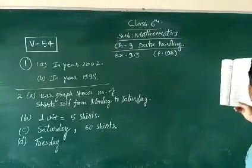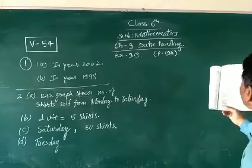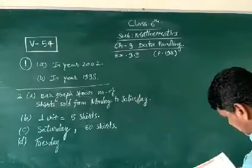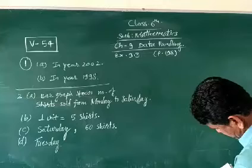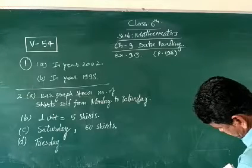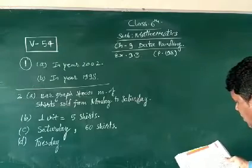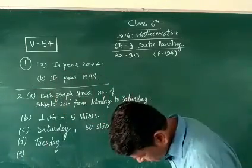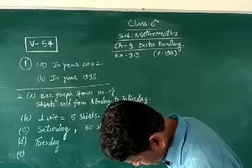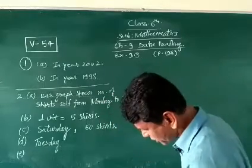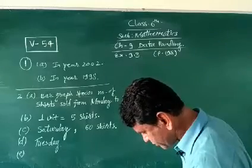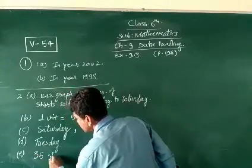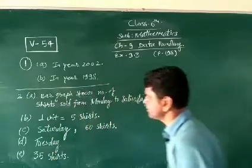Question number E: How many shirts were sold on Thursday? First time we see here, then we see the scale. It's near about... Thursday was the number of shirts sold. So the answer is thirty-five, thirty-five shirts. This is the answer.